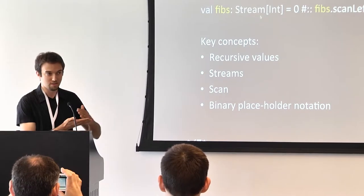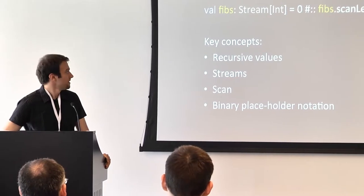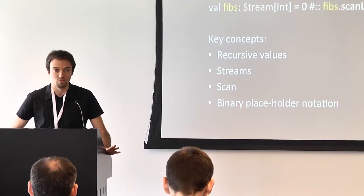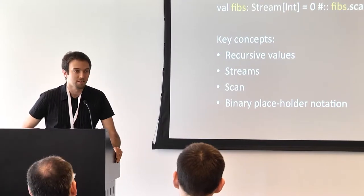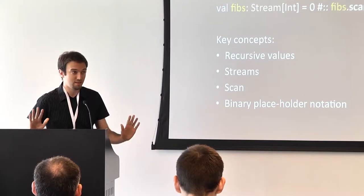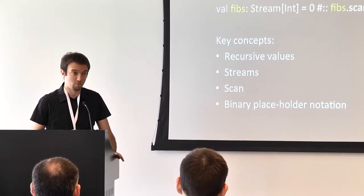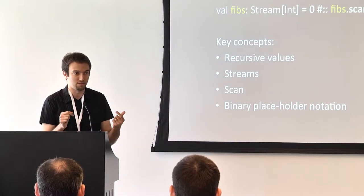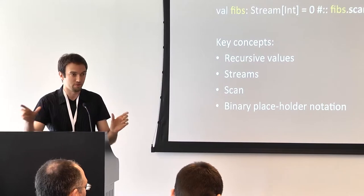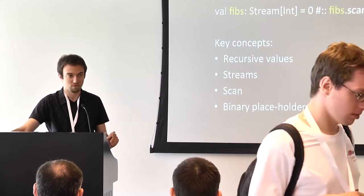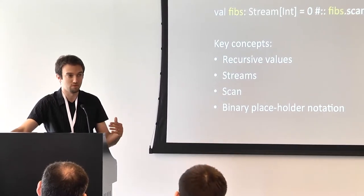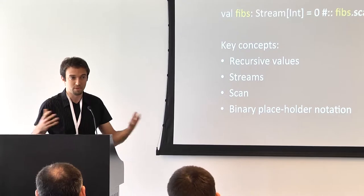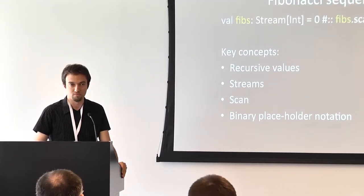What we want to produce is the sequence of all the Fibonacci numbers. The way we're going to produce them is using streams. Basically, a stream is a lazy collection. It's very similar to a list, which is a linked list, but with one minor difference: the tail is lazy. Each list consists of the head and the tail — the first element and the rest. The tail is lazy, meaning only when you access it does it get materialized. This allows us to work with infinite streams and do very cool stuff.